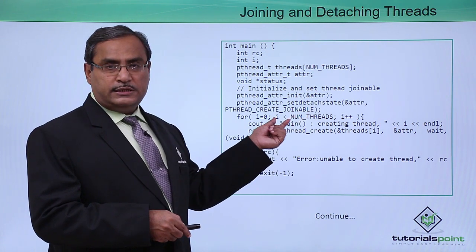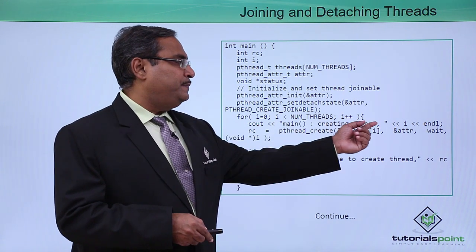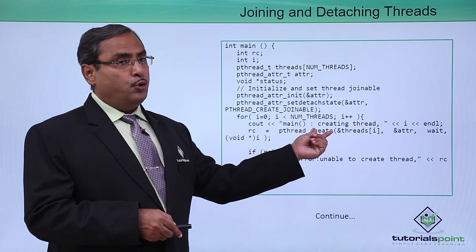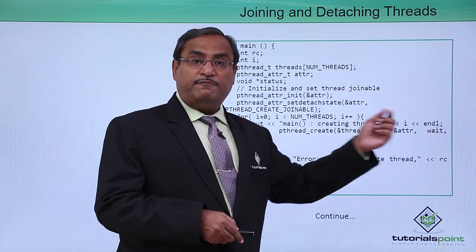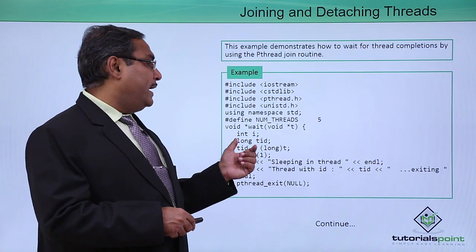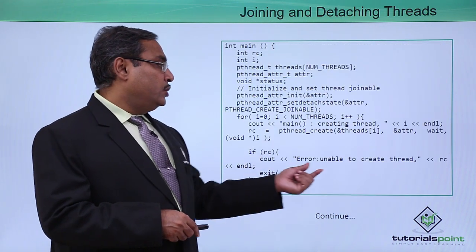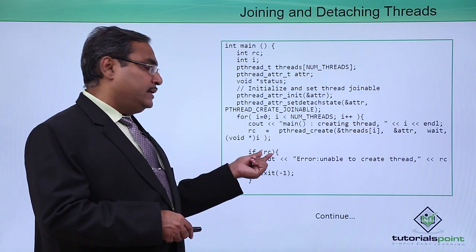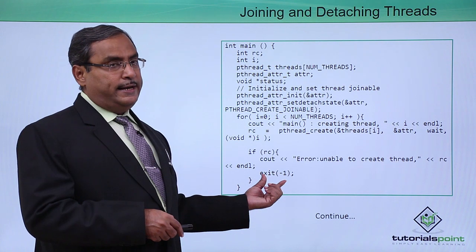A for loop runs from i=0 to i<5. The main function prints the value of i, then rc = pthread_create is called to create the thread. pthread_create requires 4 input arguments: the thread ID, the attribute, the function (the 'wait' body to be executed), and the required argument. It returns rc; if rc is true, an error message is printed and exit(-1) indicates termination of the code.